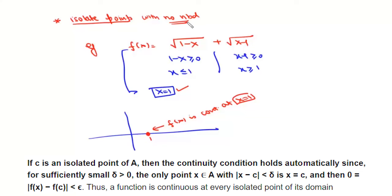So at all the isolated points where we do not have any neighborhood, function f(x) is assumed to be continuous. We get this result from the epsilon-delta definition. In this case, for every epsilon we will get some value of delta.